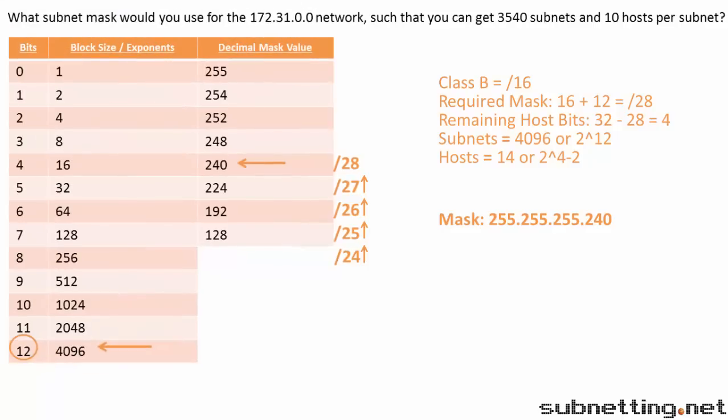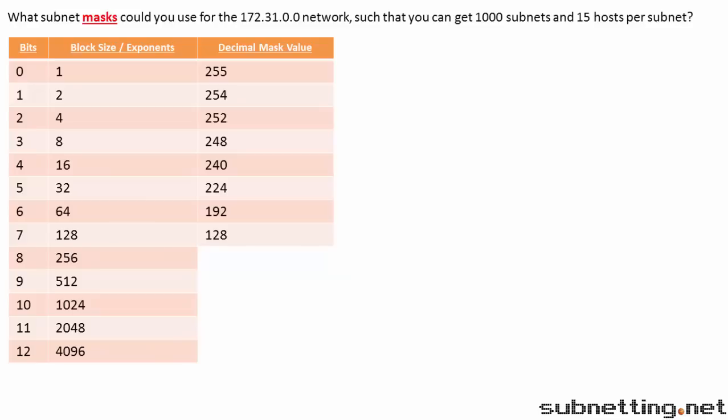Just to make sure it's clear, we're going to change the question slightly. What subnet masks could you use for the 172.31.0.0 network such that you can get 1,000 subnets and 15 hosts per subnet? Notice this question uses the word masks, plural, implying there is more than one correct answer. This is a class B address, so our default subnet mask is slash 16. So let's try to find a subnet mask that will satisfy 1,000 subnets.